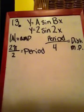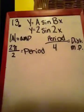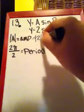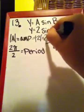So in this case, we need our amplitude, which is the absolute value of a, which is the absolute value of 2, which is just 2.